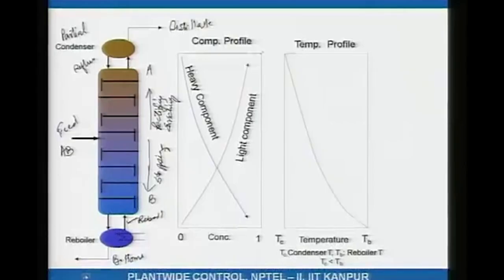This is called a simple distillation column — you take one feed and make two product streams, the distillate and the bottoms, with no side draws. If you have side draws from a column, those are called complex columns. Anything beyond the simple case — taking a side draw and stripping or rectifying it, having a prefractionator and main column, etc. — is called a complex column configuration. This simple distillation unit consists of a rectifying section, a stripping section, two product streams, and one feed stream.